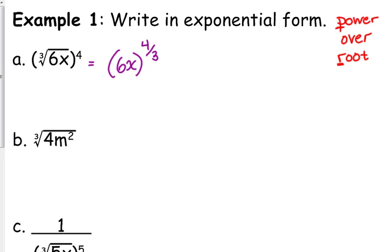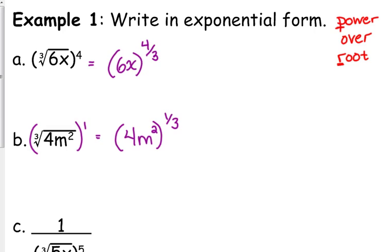Notice B is slightly different. That squared is not on the entire expression — that squared is only on the M. So you have to look at the entire expression as being raised to the first power. This is 4M squared to the 1 over 3, or the 1 third power, which means the cube root of 4M squared. Be careful of where the exponents are — whether they're outside the entire expression or on a single term.